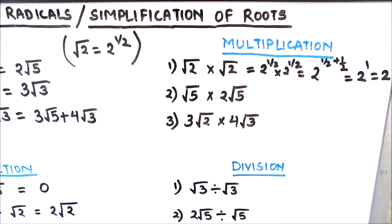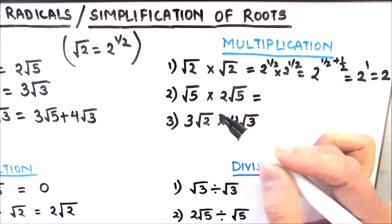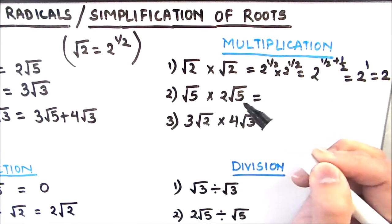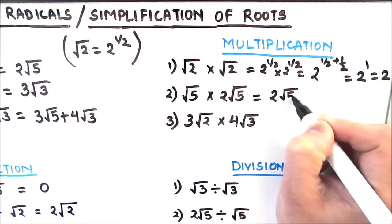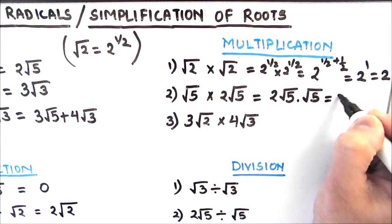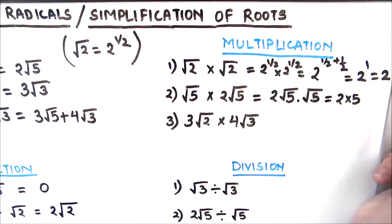If the numbers under the root sign are the same and we multiply them, we get the number itself. The next example is root 5 times 2 root 5. You can consider this the same as x times 2x — it becomes 2 times root 5 times root 5. Root 5 times root 5 equals 5, so this gives 2 times 5, which equals 10.